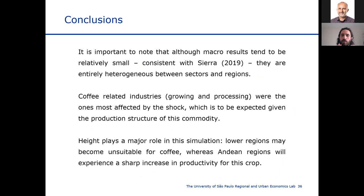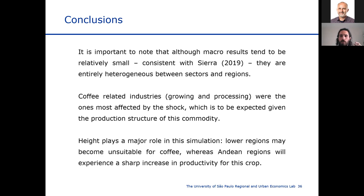The conclusions: though the macroeconomic results seem relatively small — consistent with Federico's estimations — they are entirely heterogeneous between sectors and regions. Coffee-related industries were the ones most affected by the shock. High altitude plays a major role, as lower regions will become unsuitable for coffee while higher regions will experience increased productivity. An important limitation is that the model only considers a change in productivity for coffee, not for all other crops, and does not take into consideration the competition for land due to climate change effects.